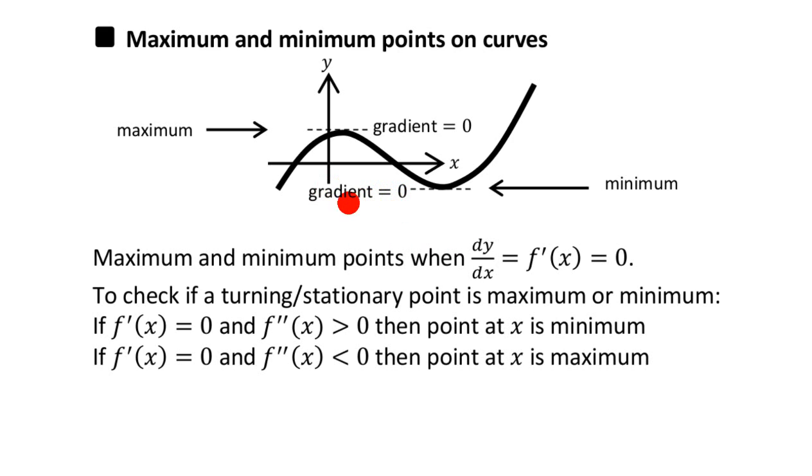You will know that you've got what is called a turning point or a stationary point, which is a general way of talking about either a maximum or minimum point. So this is a turning point because it turns from positive to negative. And so is that a turning point because it turned from negative to positive in this case over there.